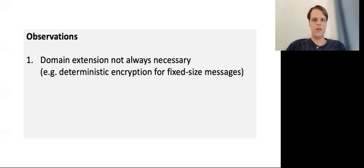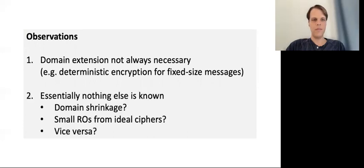For example, if we are building our hash function from a random permutation using the sponge construction, we might be interested in reset indifferentiability for very small messages. Secondly, we observe that basically nothing is known about reset indifferentiability beyond the impossibilities. Prior work didn't even establish the possibility of domain shrinkage — building a small random oracle from a big one. This might seem obvious since we could just pad the input to get a smaller domain, but it was not clear that this was possible, and in fact some work has demonstrated barriers to doing this and left it as an explicit open problem.